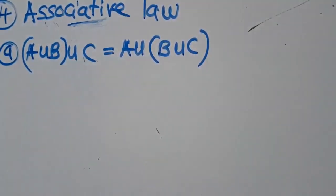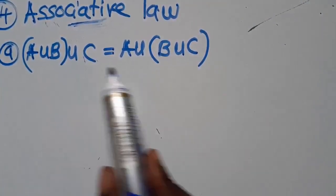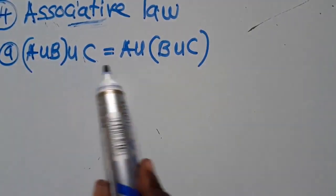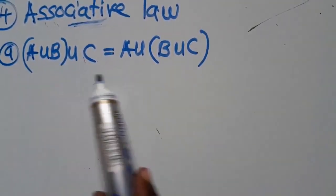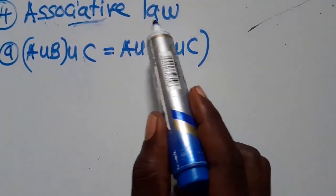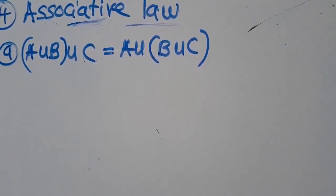Someone messaged me and asked: how can I know in an exam whether something is distributive, associative, or commutative? The way you can know them is the same way I'm writing them — you recognise that associative law is in this manner. Any question that falls in this pattern, you'll know it falls under this law. These are the steps you need to follow.